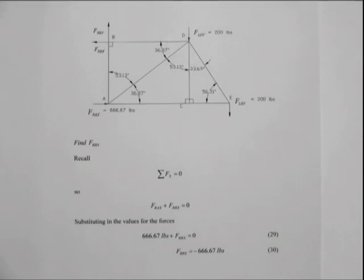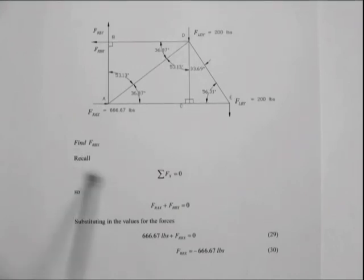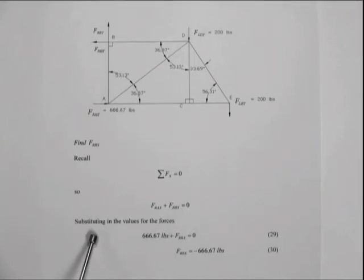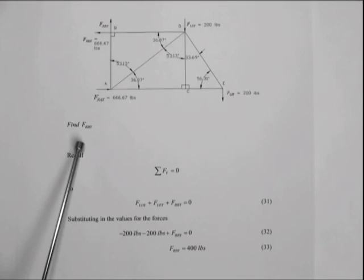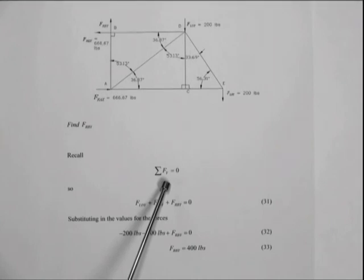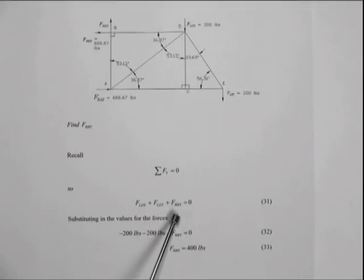The next step is to find the reaction force at point B in the X direction. Recalling that the sum of forces in the X direction must equal zero, the force RAX plus the force RBX must equal zero. Substituting in our known value for RAX, we find that RBX is negative 666.67 pounds. Finally, we want to find the reactive force at point B in the Y direction. Recalling that the sum of forces in the Y direction equals zero, the force LDY plus the force LEY plus the reactive force RBY equals zero.